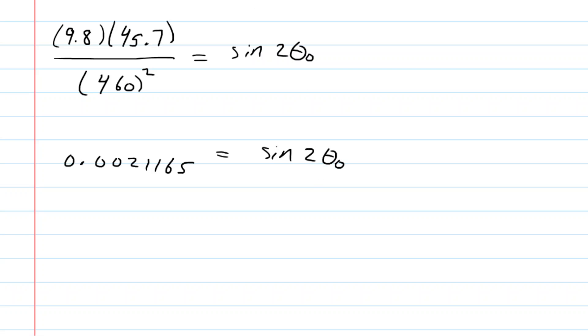To do that, you're going to take the inverse sine of both sides of this equation. The inverse sine and the sine on the right side will cancel. This gives you twice the launch angle. On the left side, you just punch that into a calculator, and you're going to get a very tiny angle. It's 0.12126 degrees, and then finally divide both sides of that by two, and you will get 0.0606 degrees approximately as the launch angle.